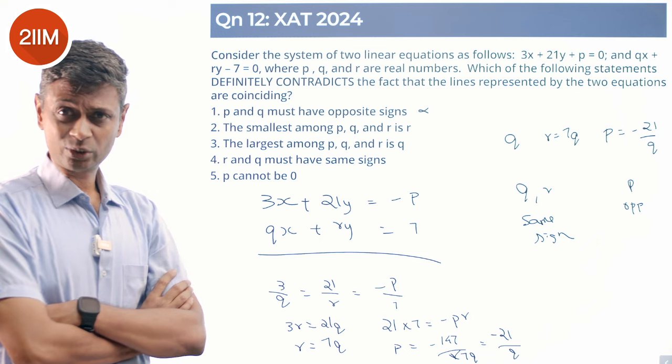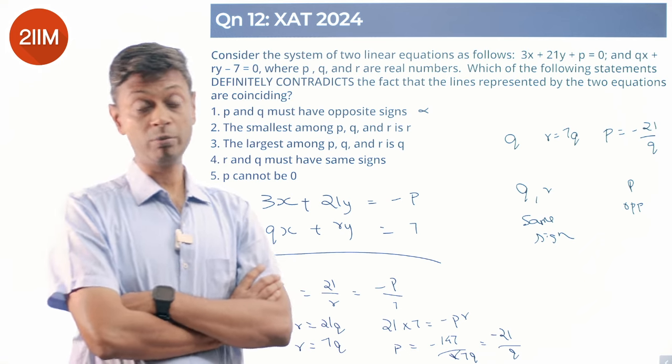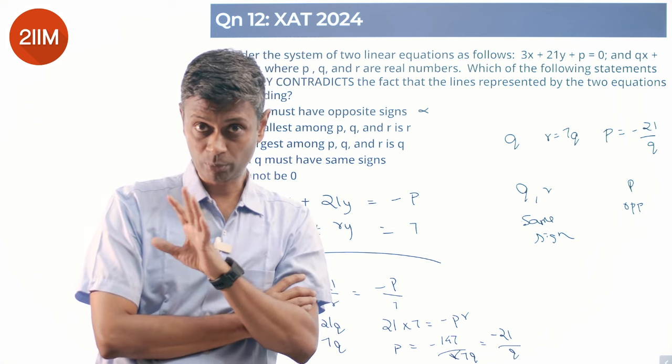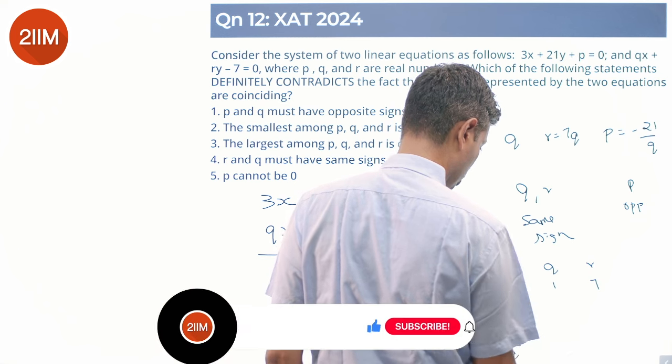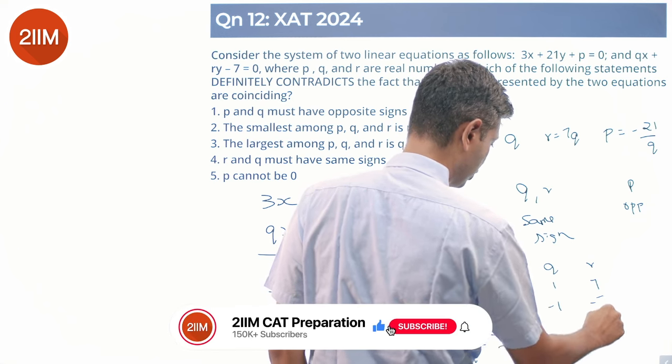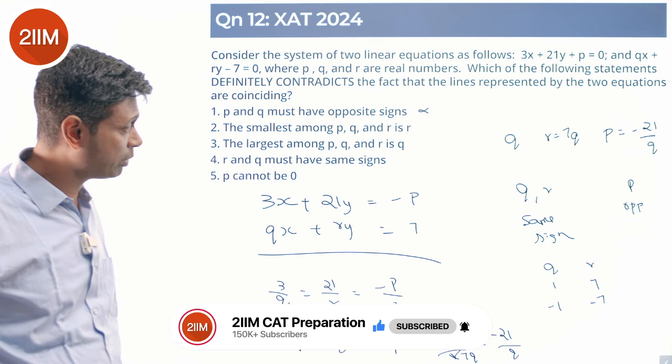The smallest among p, q, and r is r - not required. We have r is 7q, but we don't know anything else. So q could be 1, r could be 7, or q could be minus 1, r could be minus 7. Both are possible.